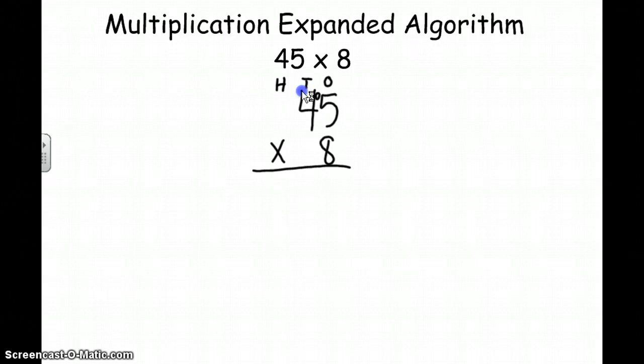So our first step in the expanded algorithm is to do our ones place times our ones place. And we're always going to start with the bottom number, which is the 8 in the ones place. So our first step is 8 times 5 equals. We take our ones place times our ones place, and that's going to give us the product of 40, and we're going to line up our places.